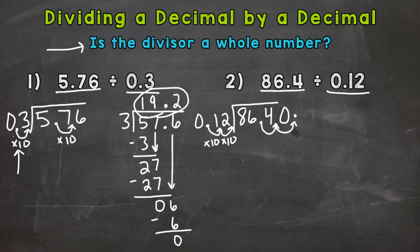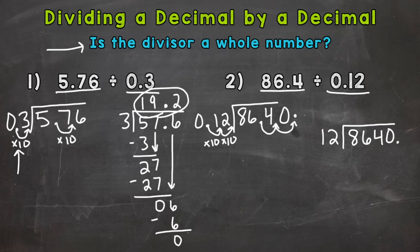Our new problem is 12 on the outside and our dividend is 8640 on the inside — the decimal is at the end, so it's a whole number. We can keep the decimal there in case we need to extend with zeros for remainder purposes. Let's go through our steps.